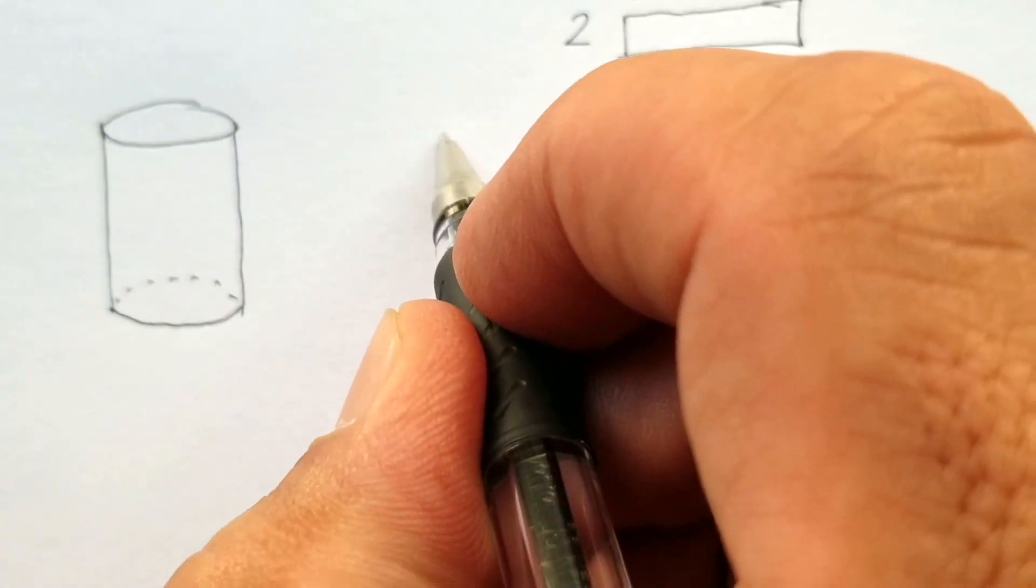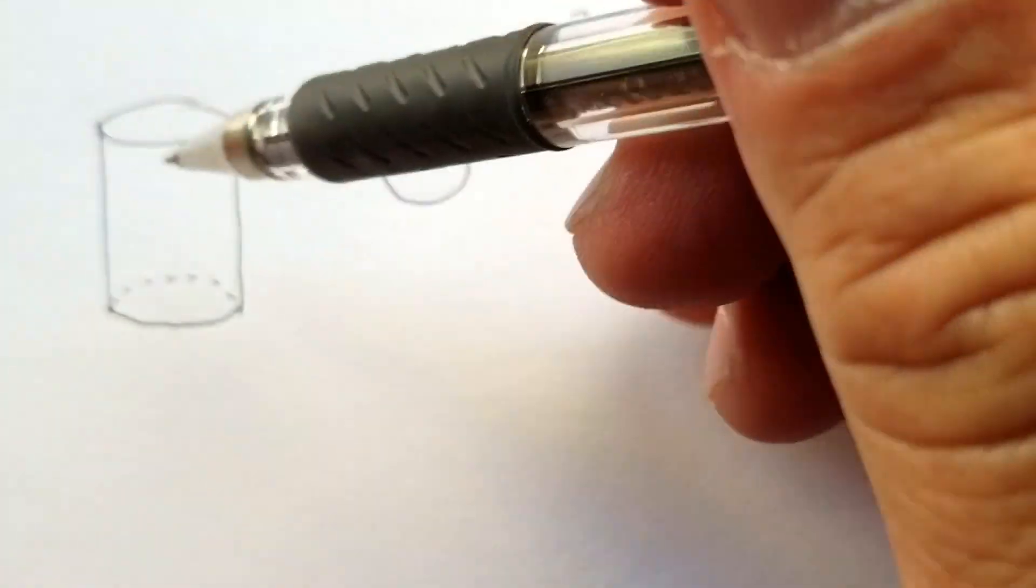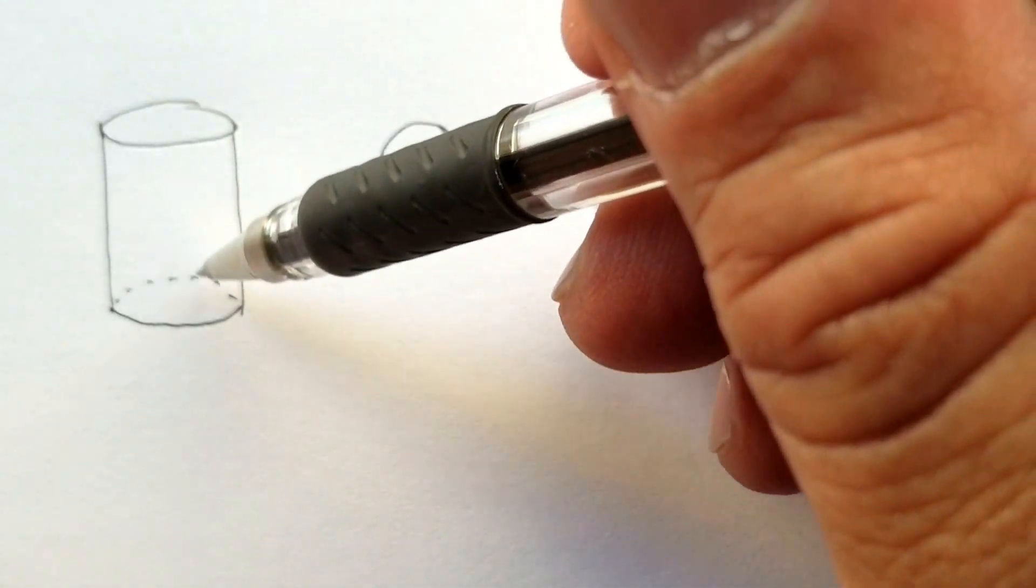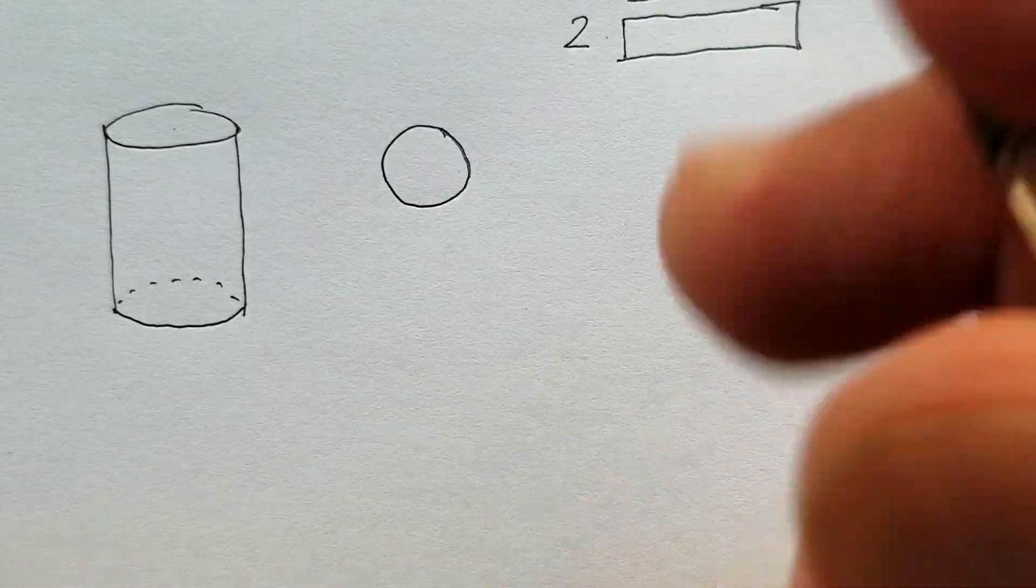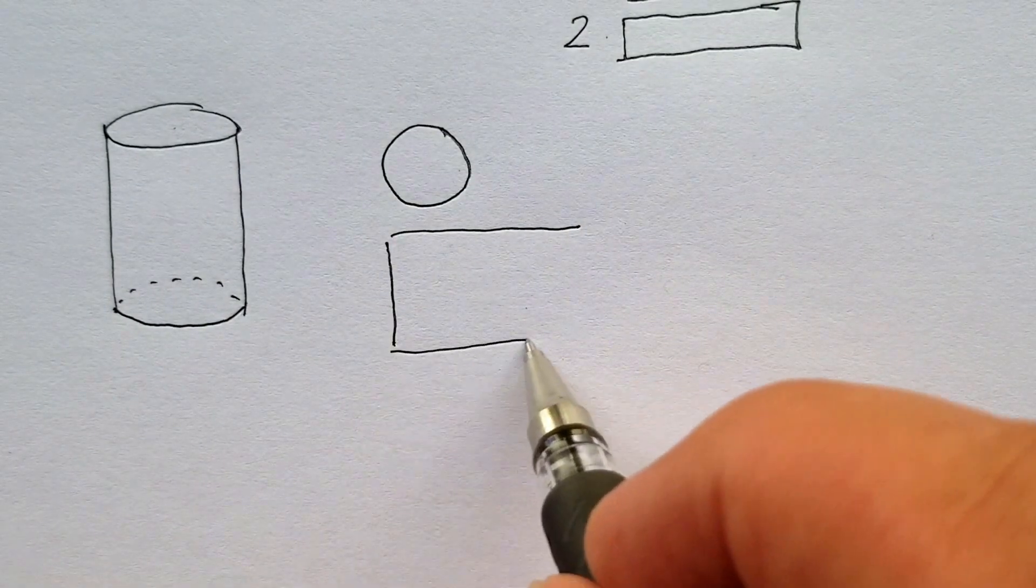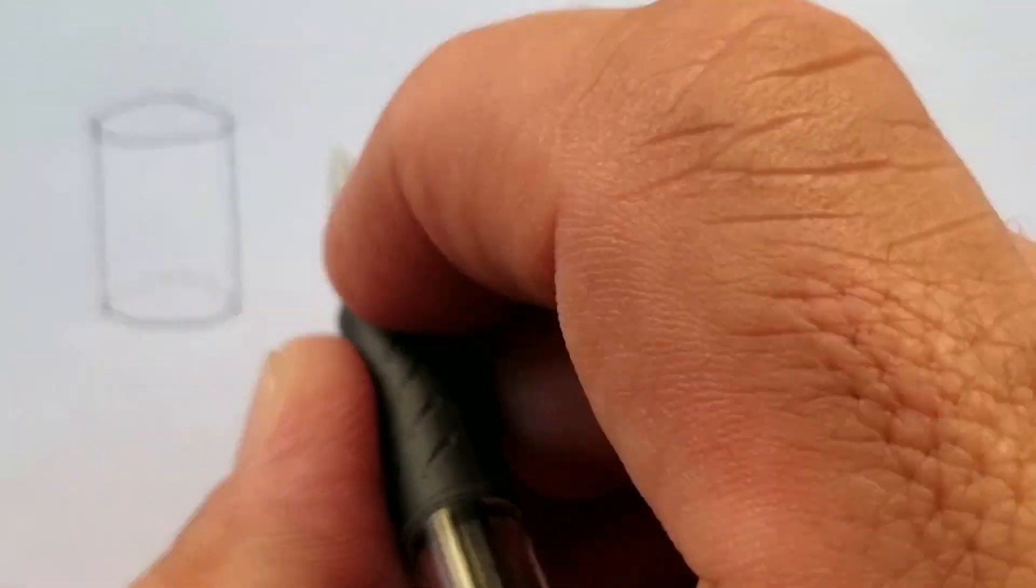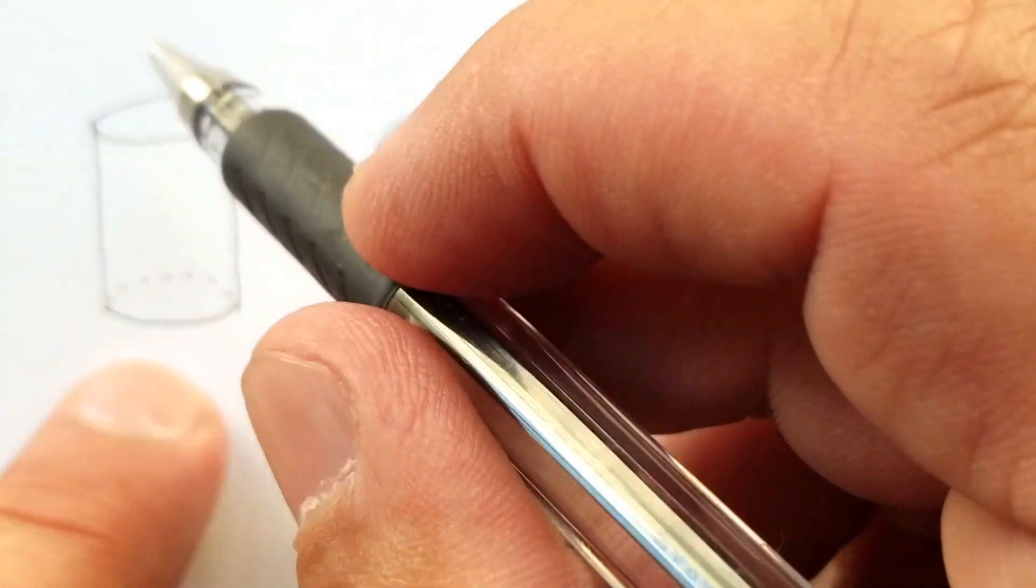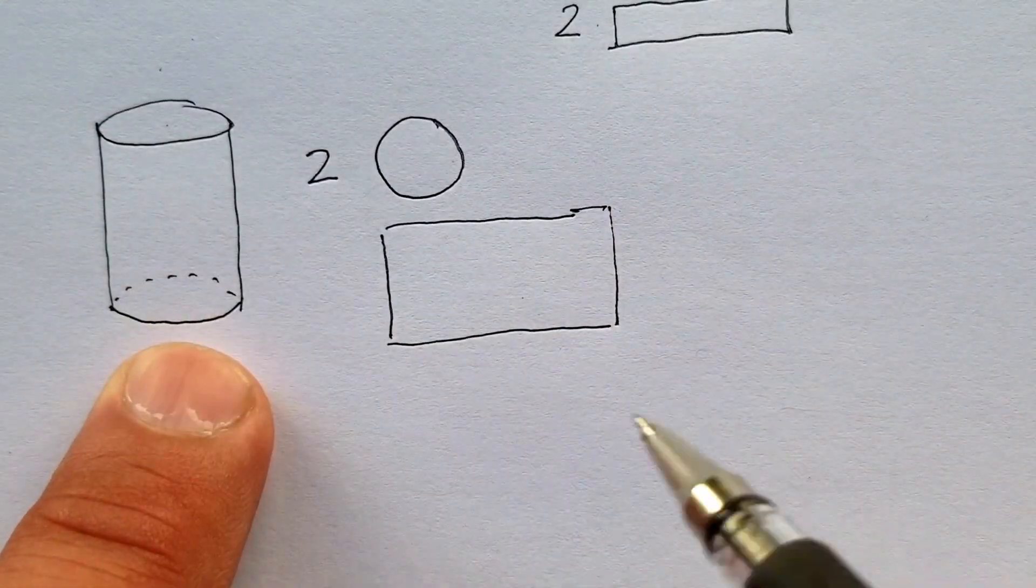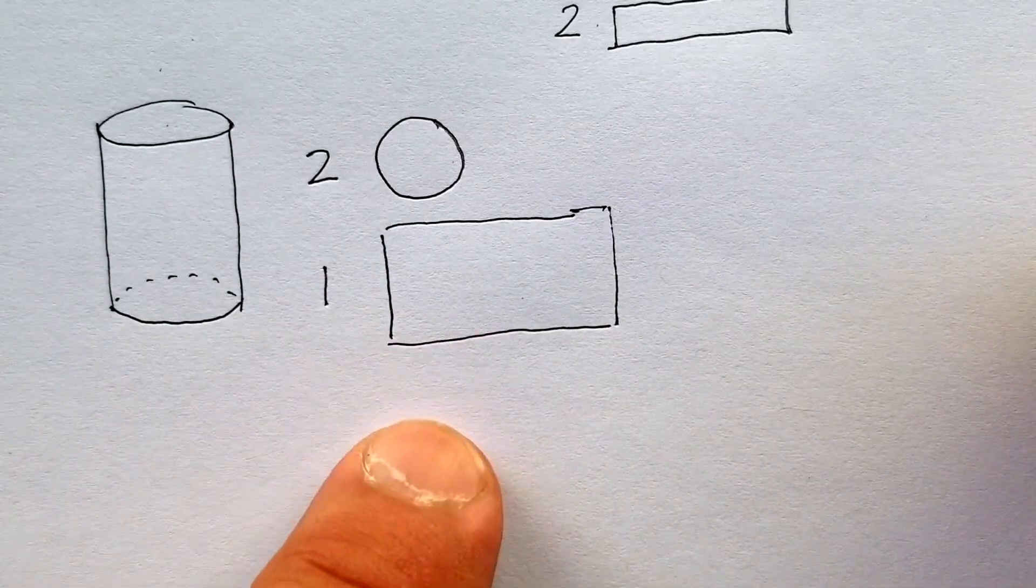into its component shapes, it would look something like this. You would have two opposite circles—one for the top, one for the bottom. And then pretend you cut this cylindrical shape right down the middle and then unrolled it. If you unrolled it, you would basically get some kind of rectangle. You would have two, top and bottom, and then one unrolled body. How would you find the surface area of a cylinder?